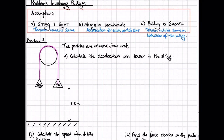So let's have a look at an example. Problem number one. We have two particles which are connected by a light inextensible string, which passes over a smooth, fixed pulley. One of the particles has a mass of five kilograms. The other particle has a mass of three kilograms.